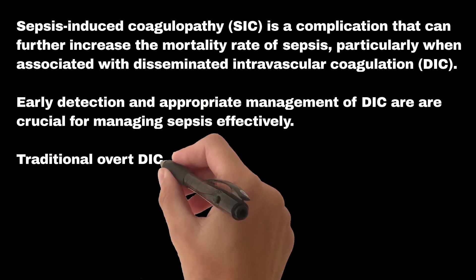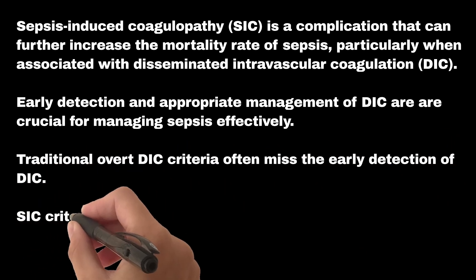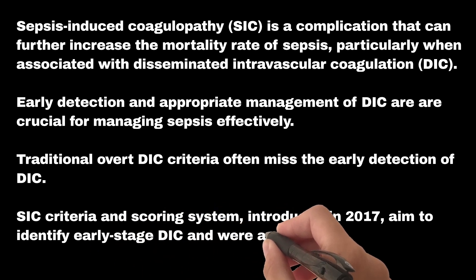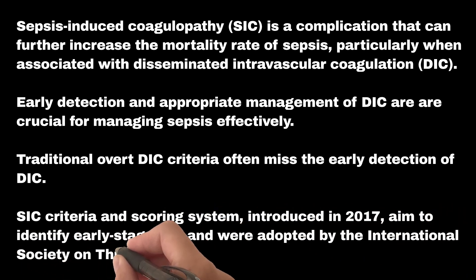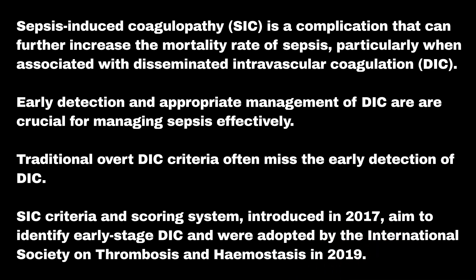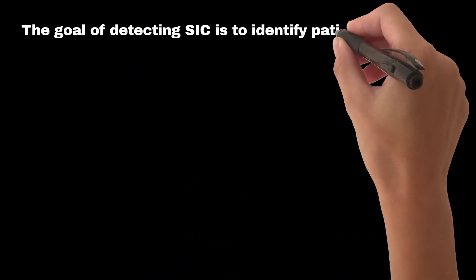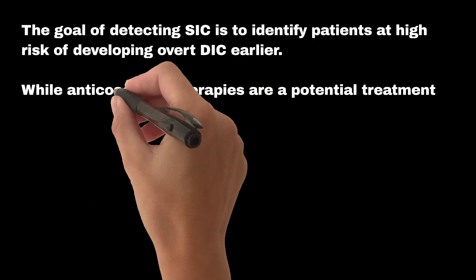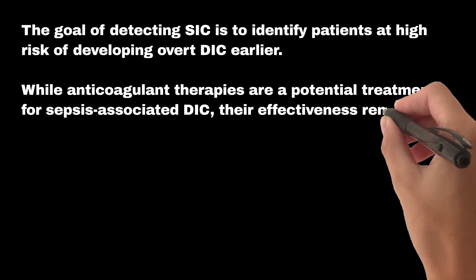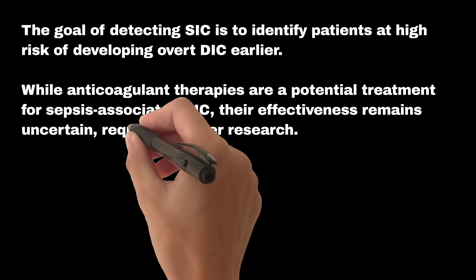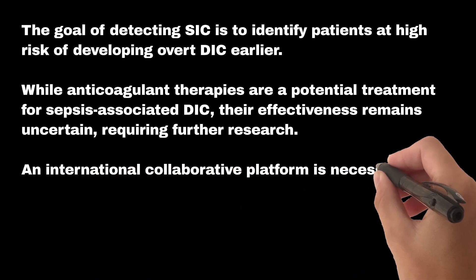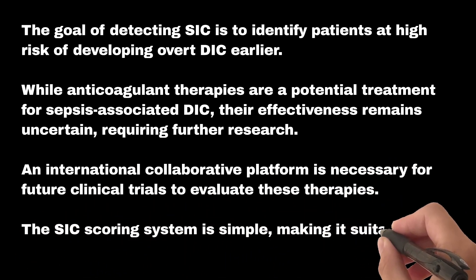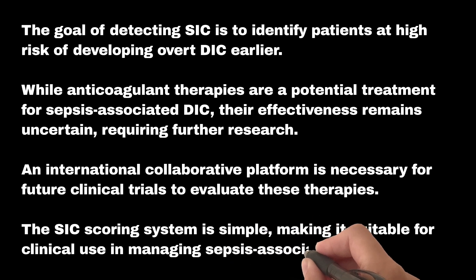Traditional overt DIC criteria often miss the early detection of DIC. The SIC criteria and scoring system, introduced in 2017, aim to identify early-stage DIC and were adopted by the International Society on Thrombosis and Hemostasis in 2019. The goal is to identify patients at high risk of developing overt DIC earlier. While anticoagulant therapies are a potential treatment for sepsis-associated DIC, their effectiveness remains uncertain, requiring further research and international collaborative platforms for future clinical trials. The SIC scoring system is simple, making it suitable for clinical use.